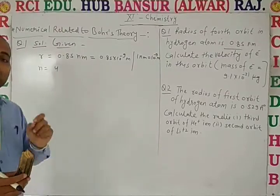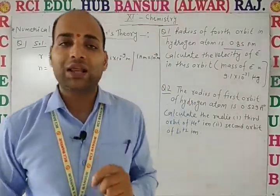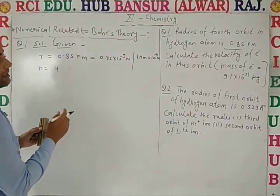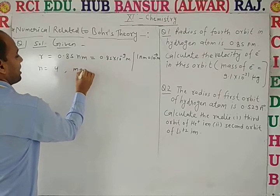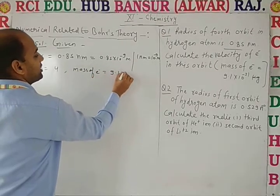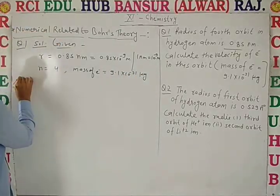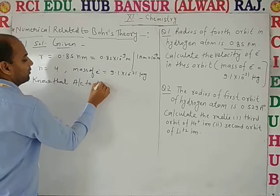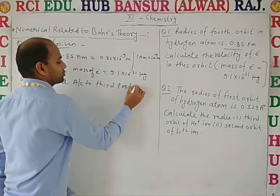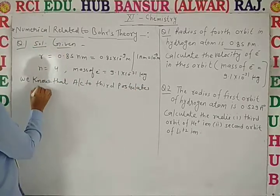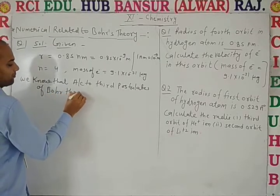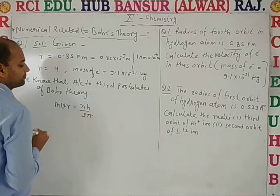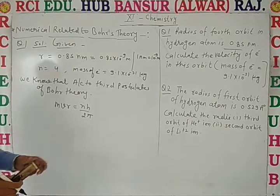For this, we use the third postulate of Bohr's atomic theory. Let us recall the third postulate of Bohr's atomic theory. Mass of electron is given: m = 9.1 × 10⁻³¹ kg. According to the third postulate of Bohr's theory, the angular momentum is a whole multiple of h upon 2π: mvr = nh/2π.